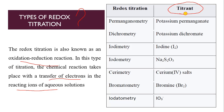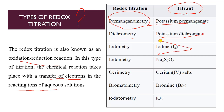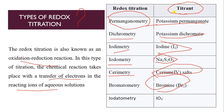This is very important. When we are using potassium permanganate as a titrant, the method is named permanganometry. When there is potassium dichromate, the method is dichromatometry. When we are using iodine, the method is iodimetry. When using sodium thiosulfate, the method is iodometry. When using cerium salt, the method is cerimetry. When using bromine, the method is brometometry. And when it is iodate, the method is iodatometry.